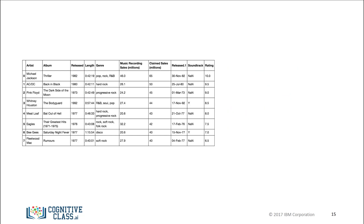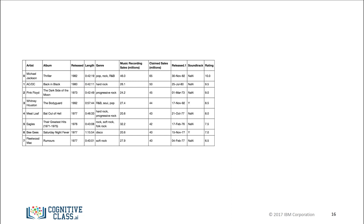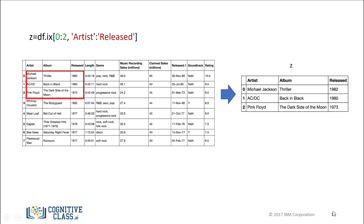You can also slice data frames and assign the values to a new data frame. We assign the first two rows and the first three columns to the variable Z. You can also slice data frames using column names — for example, assigning the first three rows and all columns between artist and released to a new data frame Z.